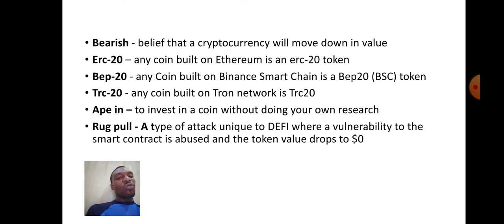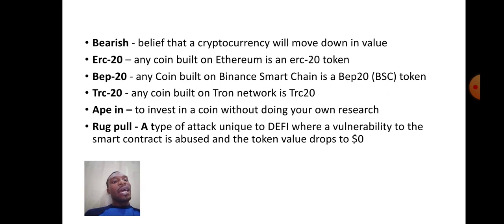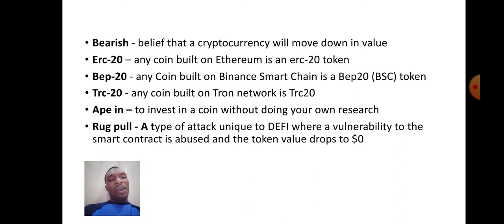Rug pull is a type of attack unique to DeFi — decentralized finance — where a vulnerability in a smart contract is abused and the token value drops to zero. We usually see it on meme coins where a coin will go up and then a big attack happens, or large investors pull out their money, and the coin drops from top to bottom immediately. That kind of event is called a rug pull.